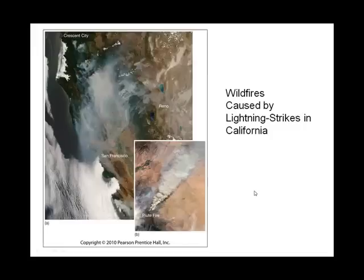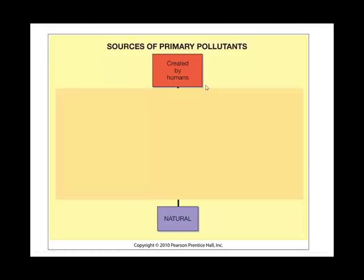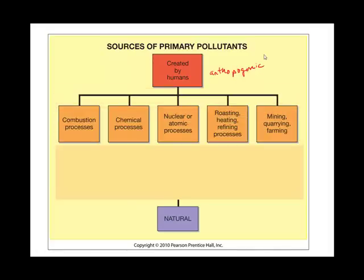To give Mother Nature its due, I have a list of different natural pollutants. Smoke — just inhaling too much smoke — can obviously kill you. Forest fires are an example of putting pollution into the air. This particular one was quite a Mother Nature thing: lightning struck and started a forest fire. So we have pollutants created by humans and pollutants created by Mother Nature. If they're created by humans, we call them anthropogenic sources.